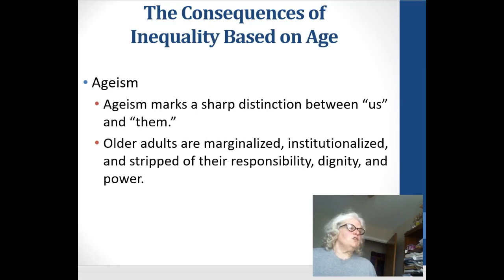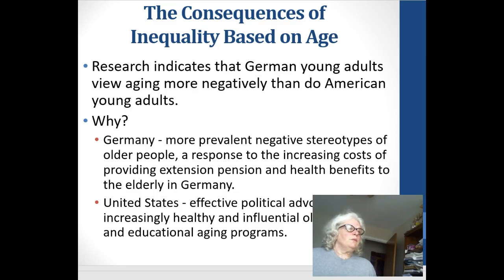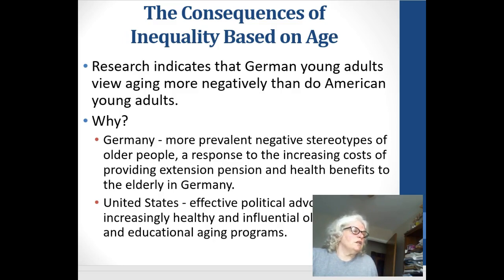So what are the social problems of aging? Ageism. We talked about racism and sexism — ageism is a marked distinction between us and them. Older adults are marginalized, oftentimes institutionalized, and may be stripped of their responsibility, dignity, and power. They fall prey to many problems within the family and within society. German young adults view aging even more negatively than American young adults because of the high cost of older adults to their society.